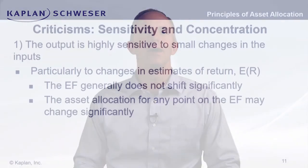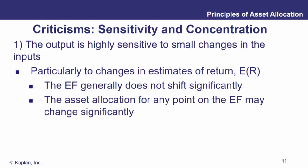After talking about the benefits of mean variance optimization, it's only fair that we talk about the criticisms. The output of mean variance optimization is very, very sensitive to small changes in the inputs. If you change the expected return on an asset class or two using your input data, you may actually get vastly different output.